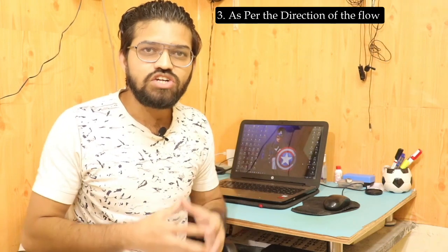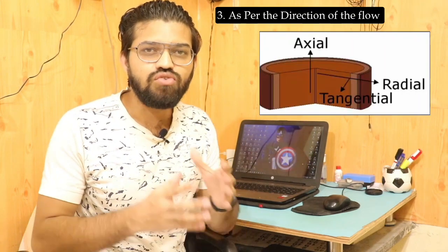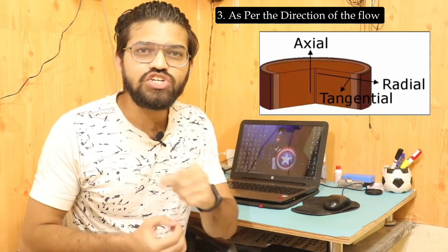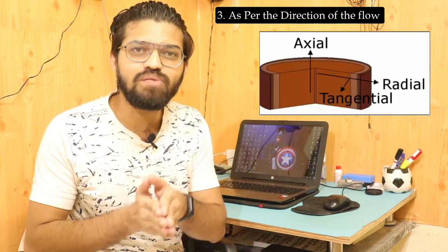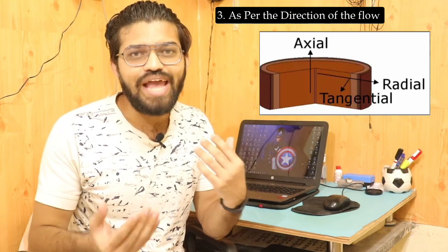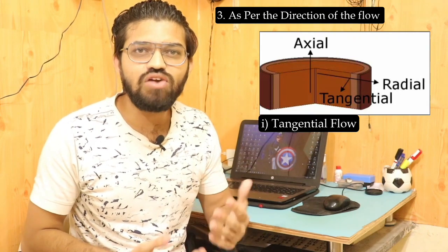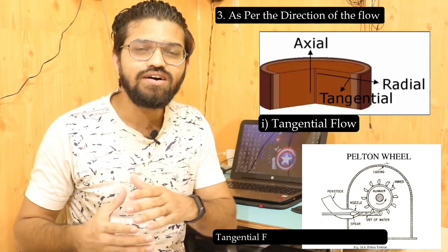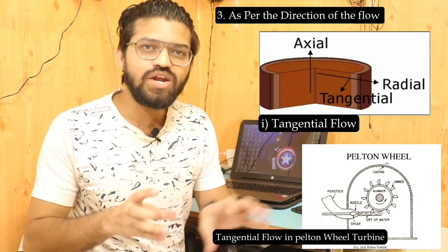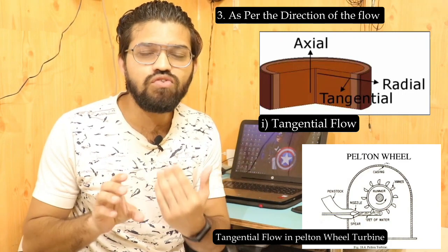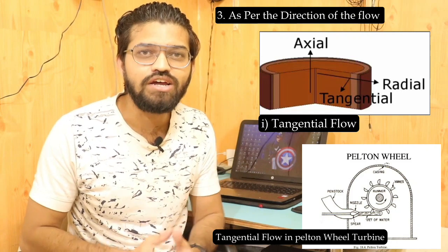The third classification is the direction of flow through the runner. Looking at the diagram, the flow direction can be axial, tangential, radial, or a mixture such as radial plus axial. The first type is the tangential flow turbine. In the tangential flow turbine, the flow enters tangentially into the turbine blades. In the Pelton wheel turbine, the nozzle directs a jet of water tangentially onto the runner — so the Pelton wheel is a tangential flow turbine.